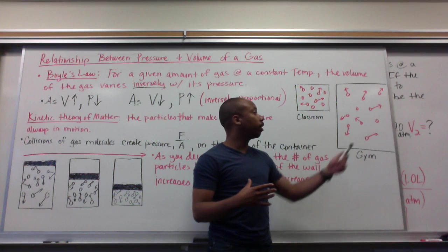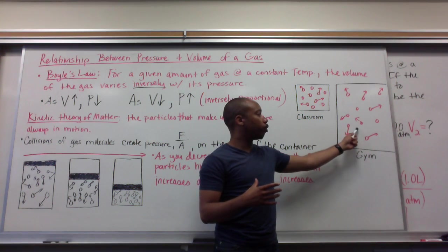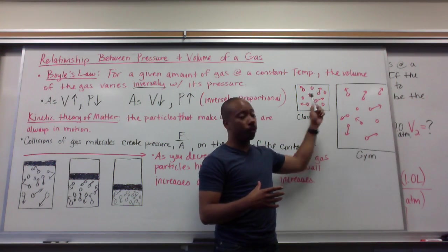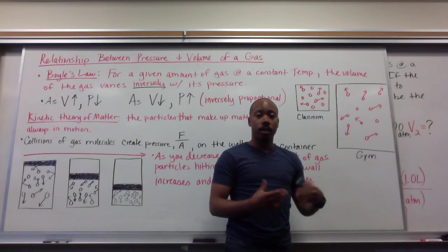If I had the same 10 students in a gym running from one side to the other at 10 miles per hour, they would take much longer. They would exert less force per area in a given amount of time. Thus, they would exert less pressure in a larger volume. So larger volume, less pressure. Smaller volume, more pressure.